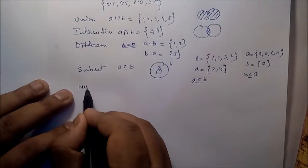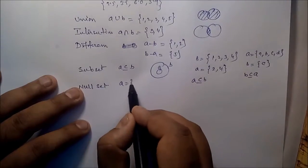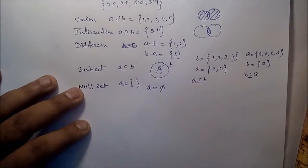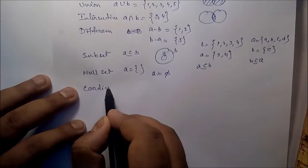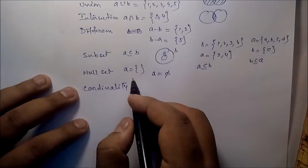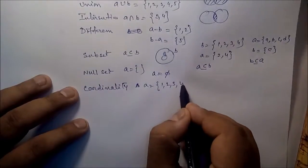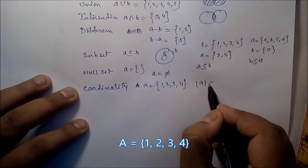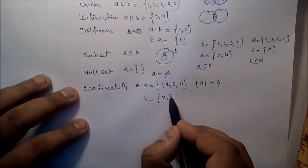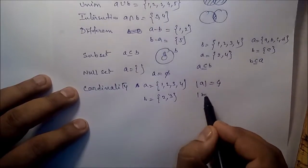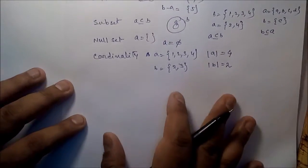Next is the null set. A null set means no element is present — we write A = {}. Next is cardinality. If A = {1, 2, 3, 4}, the cardinality is 4. If B = {2, 2, 2, 3}, the cardinality of B is 2, since only 2 unique elements are present.